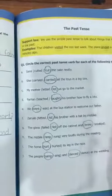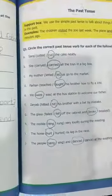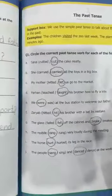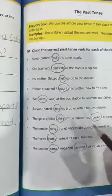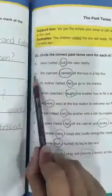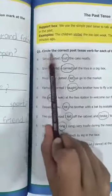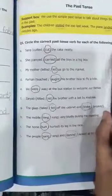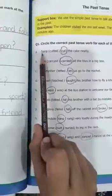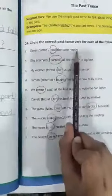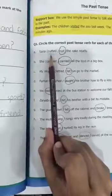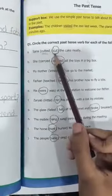The forms of verbs are already learned from our notes. Here is question number one: circle the correct past tense verb for each of the following. First one is 'Sana cutted/cut it/cut the cake neatly.' 'Cutted' is not a word, 'cut it' is not a word. The correct second form is 'cut' - all three forms are cut, cut, cut. So you will circle 'cut.'